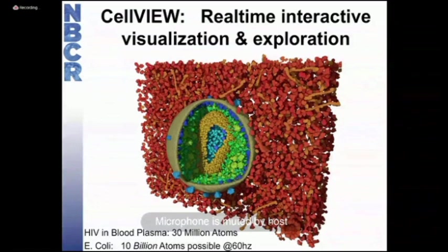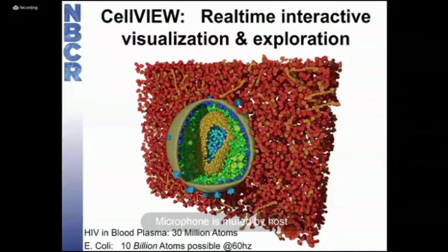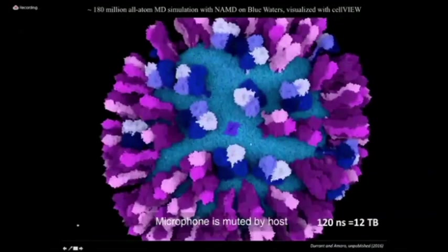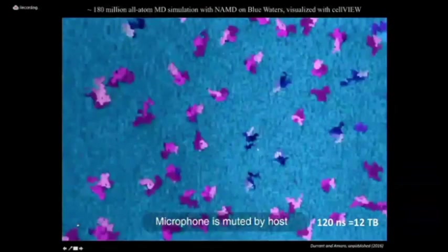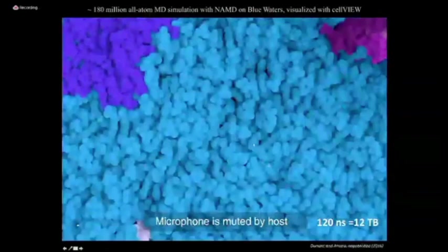Although it's been exciting to build systems at unprecedented scales, you also quickly realize it breaks every single tool you have. Along the way we've had to develop tools not just for system building but also for visualization and analysis. One of those tools we're still working on at NBCR is called CellView, which allows real-time interactive visualization and exploration of highly complex biological models. The image I'm showing is not influenza — it's actually HIV in blood plasma — but it's a neat multiscale interaction visualization platform that runs on your desktop.